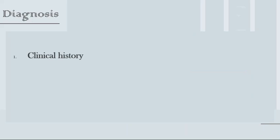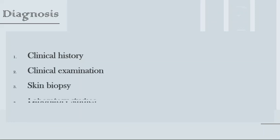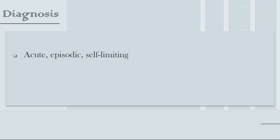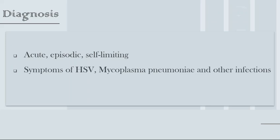Now let's discuss the diagnosis, starting with clinical history. We need to know the condition duration — is it acute? Was there a prodrome? When did the lesions appear? Clinical examination of the presented lesions, skin biopsy, and laboratory studies may be needed. From the questions and examination I will know whether the condition is acute, episodic, self-limiting, or a first episode. Symptoms of herpes simplex virus or Mycoplasma pneumonia infection in children should also be identified through medical history.